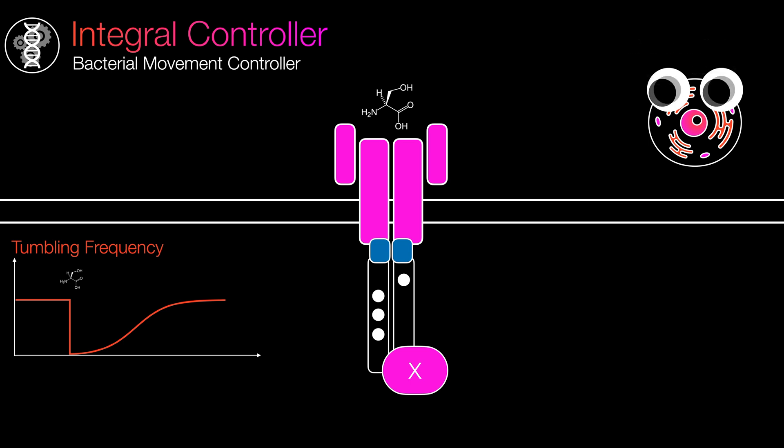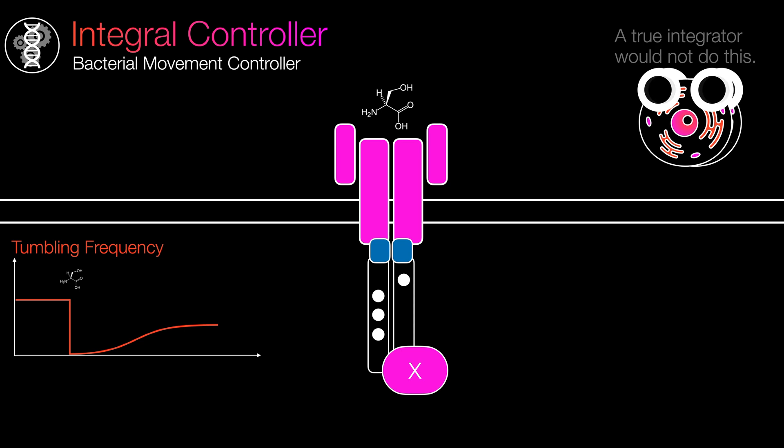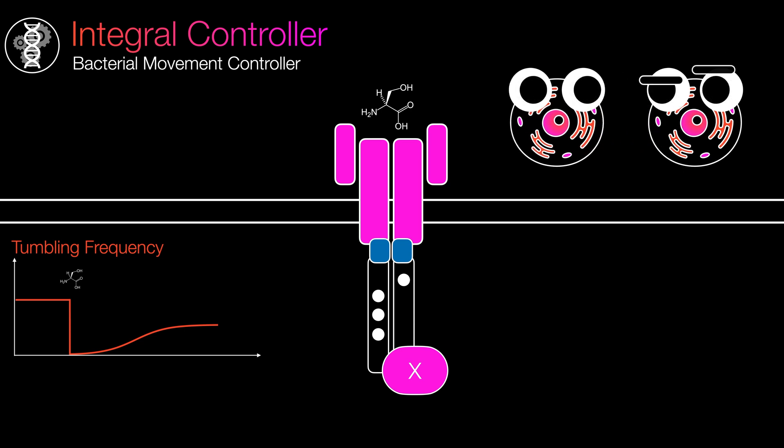But what if methylation alone isn't sufficient to restore X and the tumbling frequency to their original levels? This is the steady state error we've encountered before. If methylation truly acted as the integrator, it should not lead to this issue. So how does the system determine the appropriate level of effort to exert, such that it doesn't cause the steady state error? We could continue debating different interpretations based on biological intuition indefinitely.